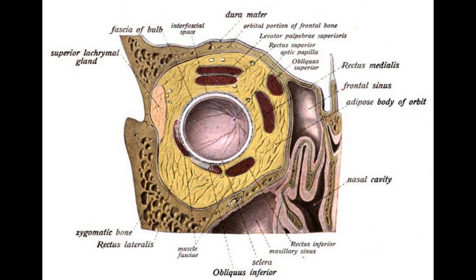The superior oblique is a muscle we need to discuss a little more. It arises from the body of the sphenoid, superomedial to the optic canal and the tendinous attachment of the superior rectus — meaning it arises from the superomedial portion. It is attached to the sclera in the superolateral part of the posterior quadrant. So the attachment of the oblique will be in the superior lateral quadrant — going from superior medial to superior lateral.